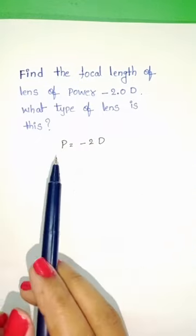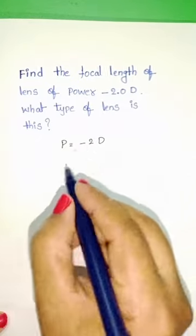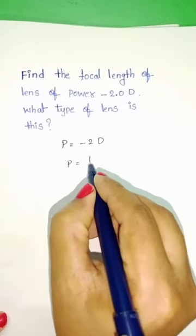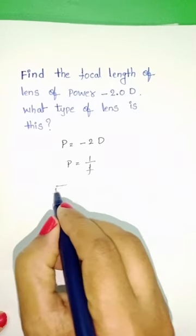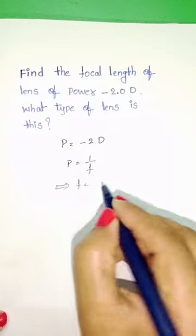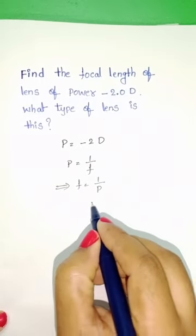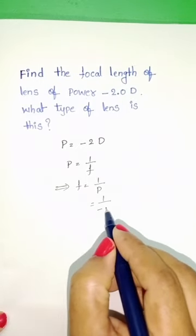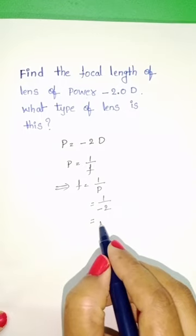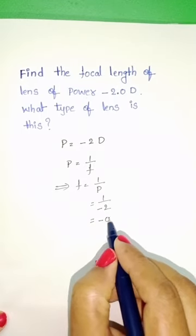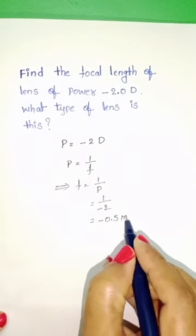We know the relation between power and focal length — power is the reciprocal of the focal length. From this, focal length equals 1 by P. Substituting power as minus 2: focal length = 1 divided by minus 2, which equals minus 0.5 meters.